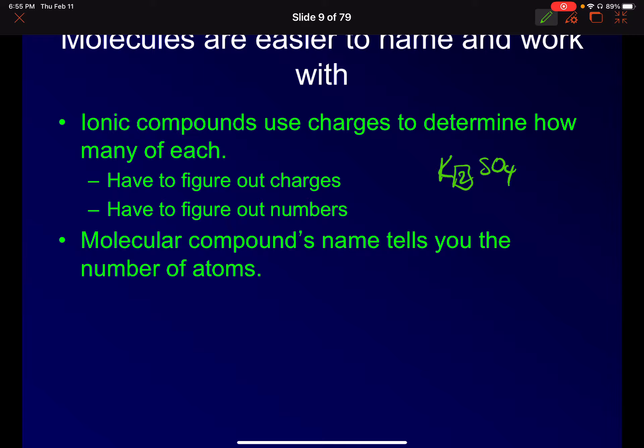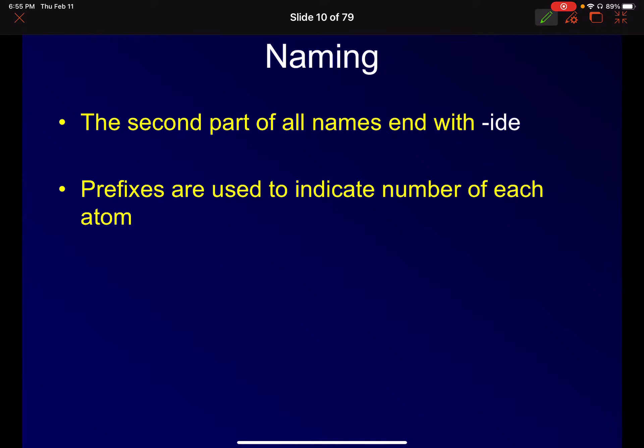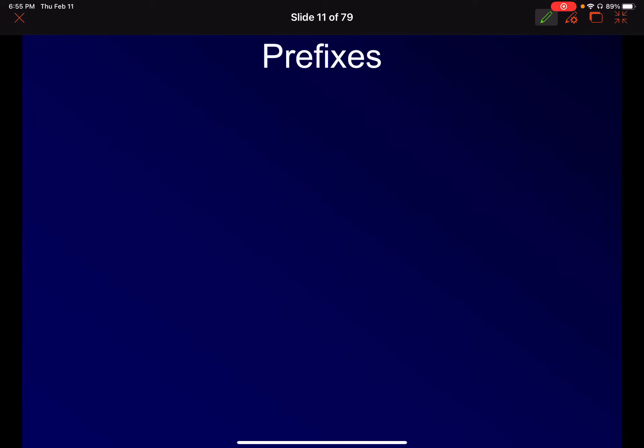Okay. In molecular compounds, the formal name tells you the number of atoms. So like ionic compounds, the second part of all the names end with ide. So as we talked about sodium chloride, we still use the ide, but now we use prefixes to indicate the number of each atom. So here are the prefixes. So please write these down.